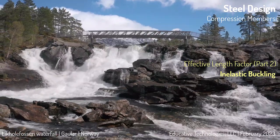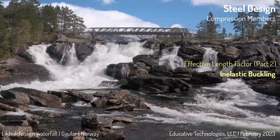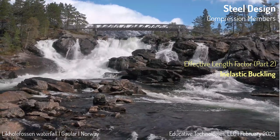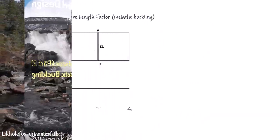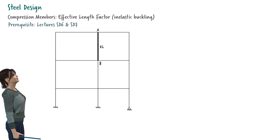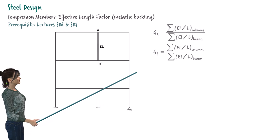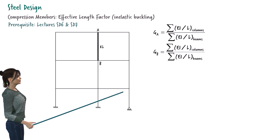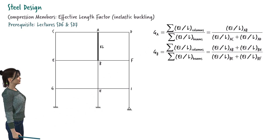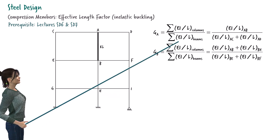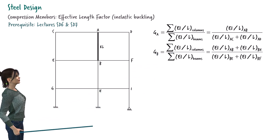In the previous lecture, we learned how to determine the effective length factor K for a column in a frame structure. First, we determined the stiffness ratios at the ends of the column, which specify the relative stiffness of the column with respect to the stiffness of the beam at each end. When we assume the beams and columns behave elastically, E can be treated as a constant, leading to simplified equations for GA and GB.